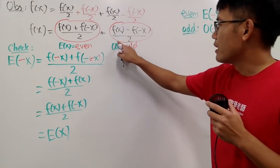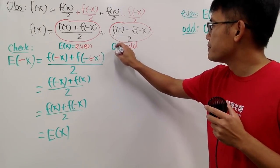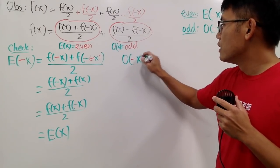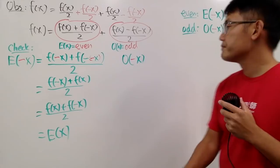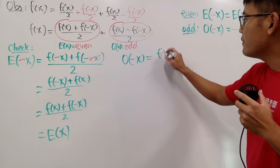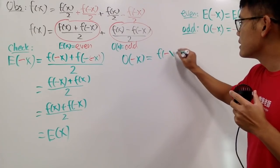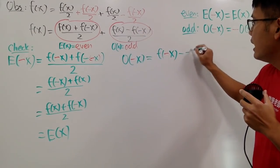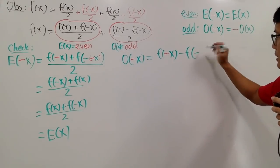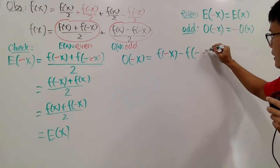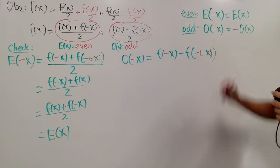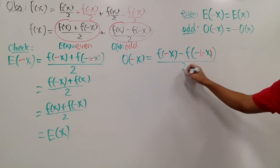Similarly, for the odd part, I will just plug in negative x as well for the O. And we see that, plug in negative x here, we get f of negative x minus f of negative x. Wrong color, but it's okay. It's Christmas color, so be happy. And divided by 2, like this.